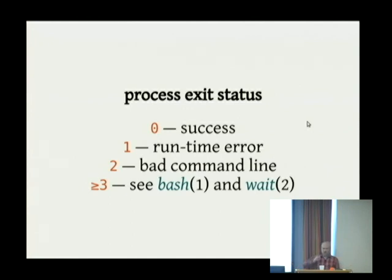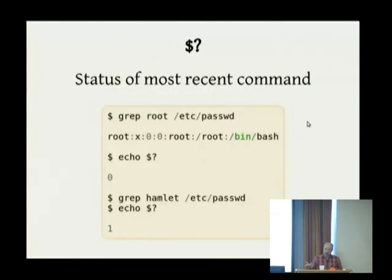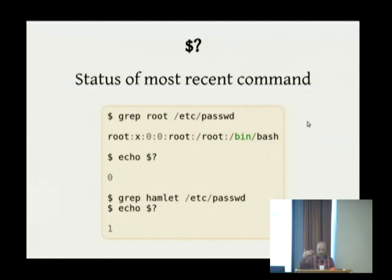The reason is that success is typically boring — one code for success was considered fine. On the other hand, there are lots of ways a program might exit with an error or problem, so they wanted to leave all of the non-zero integers free so that if a process died horrifically, it could perhaps explain why it had died. There's a special dollar-sign question-mark variable in bash that will show you whether the previous command was happy.